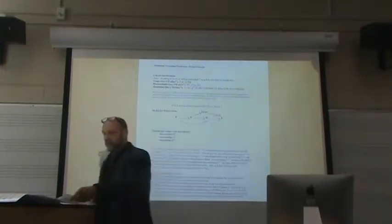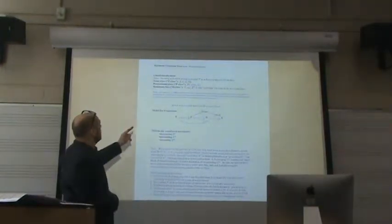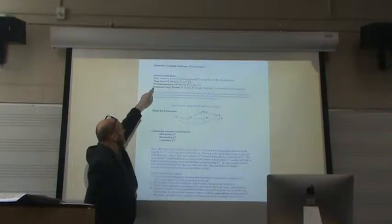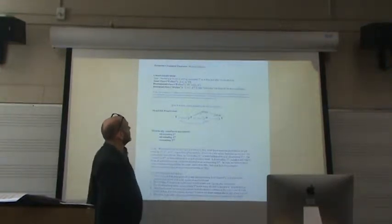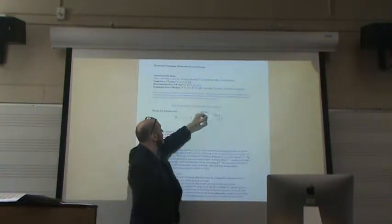So we have our chord classes we talked about before. Tonic class is 1 and 6, predominant is 4 and 2, dominant is 5 and 7, and then the cadential 6-4.